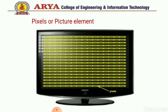Next is pixel, or picture element. The pixel is the smallest addressable area of an image — this means the smallest area of an image that can be changed.